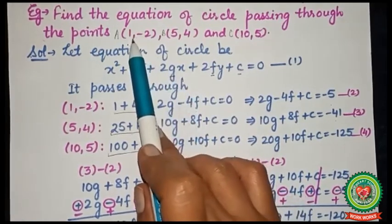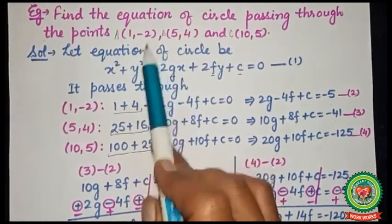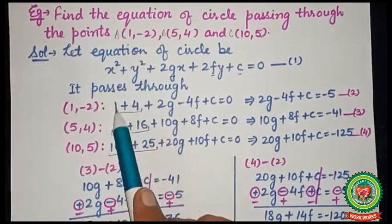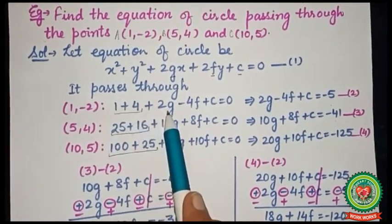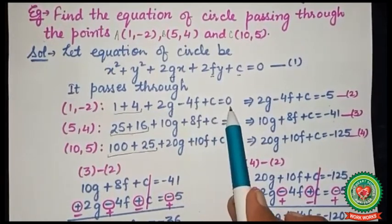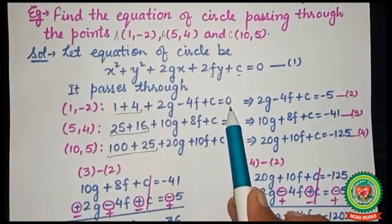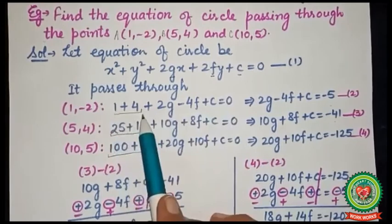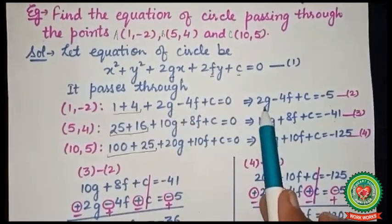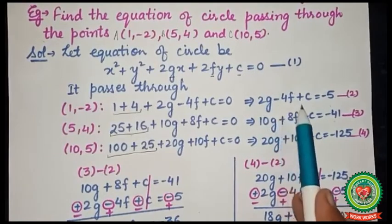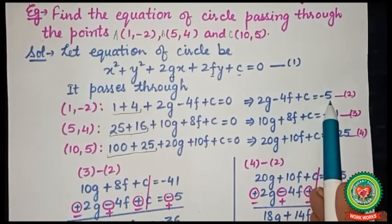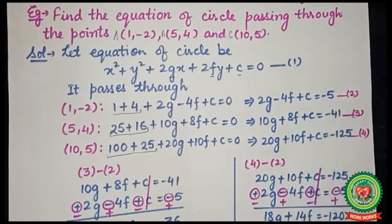Since the circle passes through point A (1, -2), we substitute into the equation to get 1 + 4 + 2g - 4f + c = 0. Shifting the constant to the other side gives 2g - 4f + c = -5. Mark this as equation number 2.